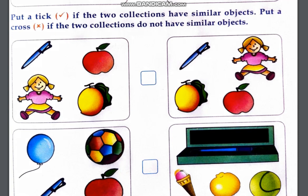There's the mango, there's the doll. Then we will tick it, why? Because two collections have similar objects. Both collections have similar objects.